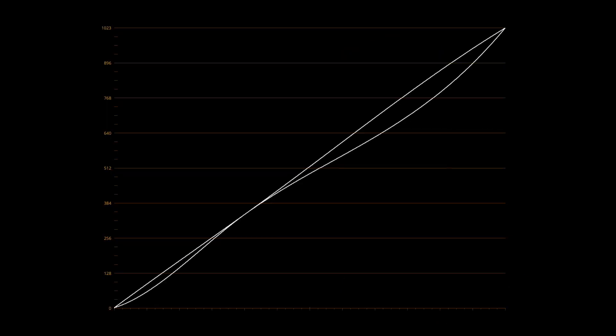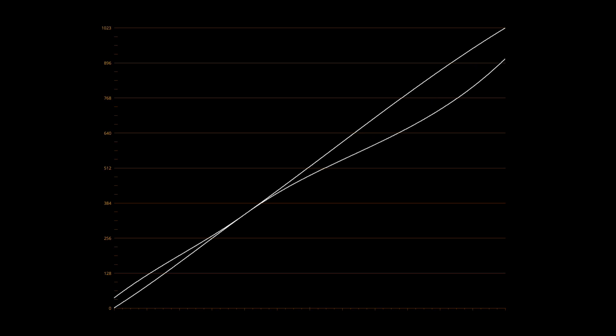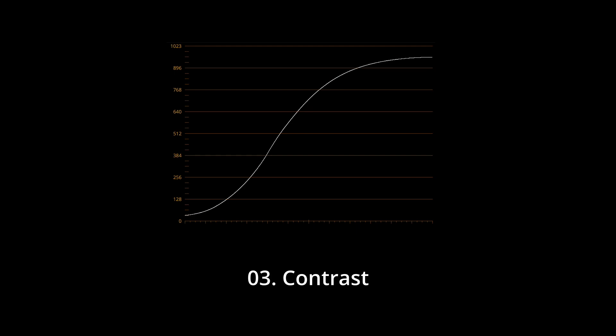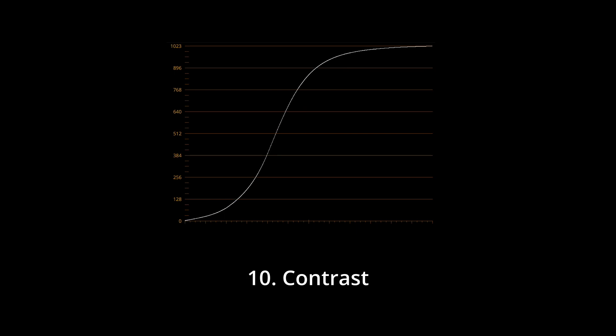LUM LUTs are vivid and SET LUTs are desaturated. In LUM LUTs the split-toning curve merges in the white and black points, and in the SET LUTs the split-toning curve doesn't merge. Contrast LUTs go from the lowest contrast to the highest.